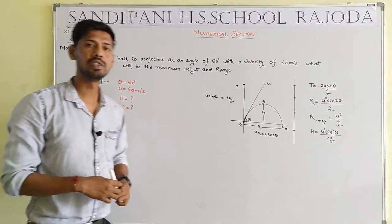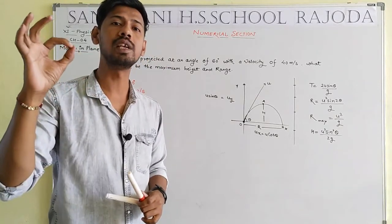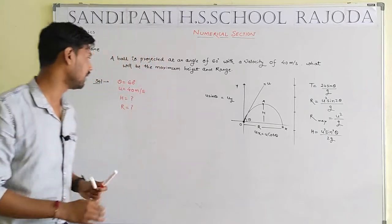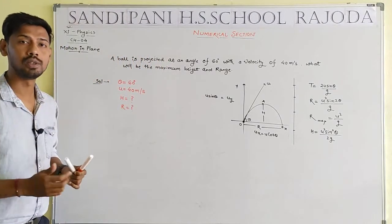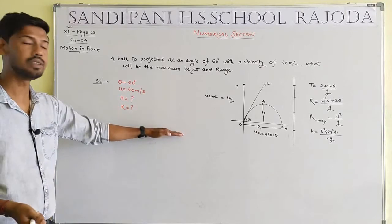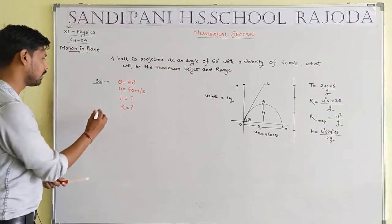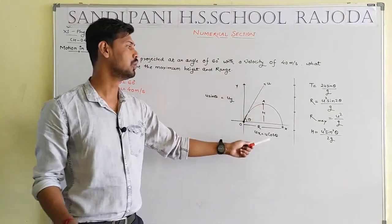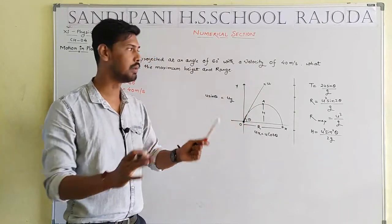In a numerical, keep two things in mind: first, the given values must be in proper SI form; and second, the SI unit of your answer should also be noted. Height and range are both measurements of length, so the SI unit will be meters. From the diagram we have: U, U cosθ, U sinθ, theta, H, and R.